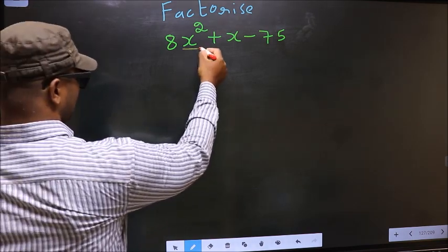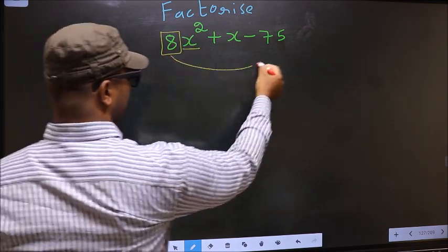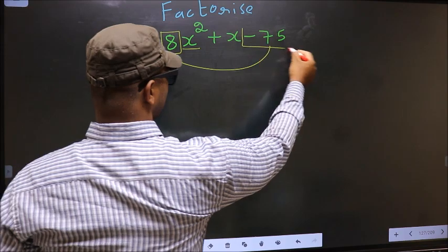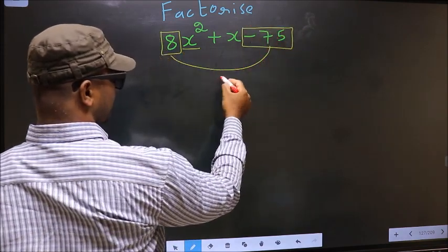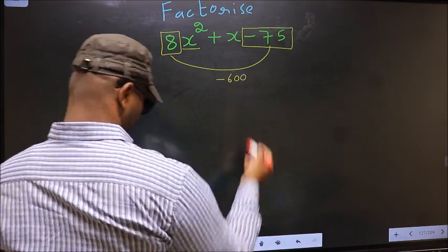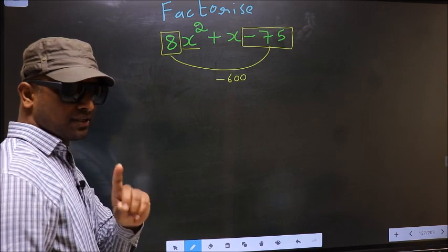Coefficient of x square, that is 8 here, should be multiplied to the constant minus 75. So 8 into minus 75, we get minus 600. This is your step 1.